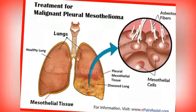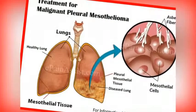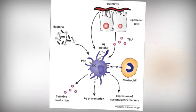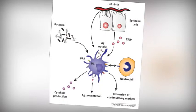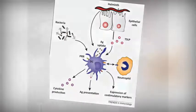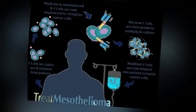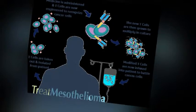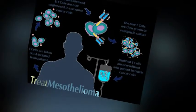Asbestos also may possess immunosuppressive properties. For example, chrysotile fibers have been shown to depress the in vitro proliferation of phytohemagglutinin-stimulated peripheral blood lymphocytes, suppress natural killer cell lysis, and significantly reduce lymphokine-activated killer cell viability and recovery. Furthermore, genetic alterations in asbestos-activated macrophages may result in the release of potentiating factors.